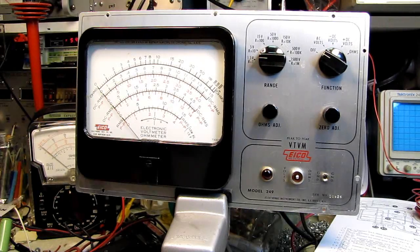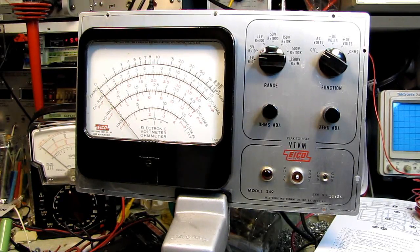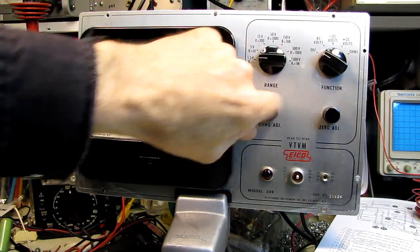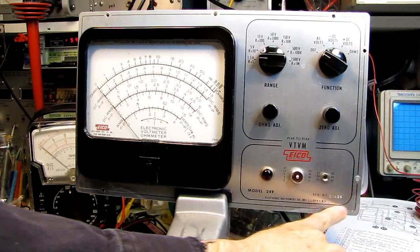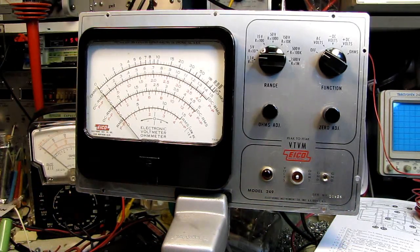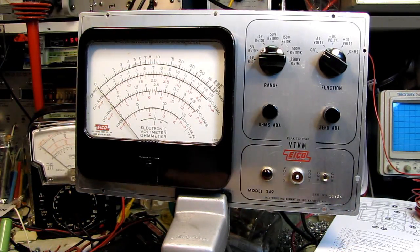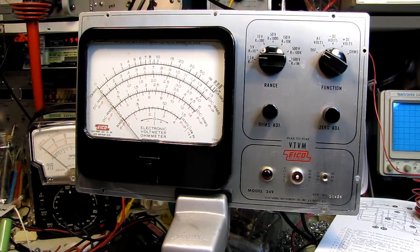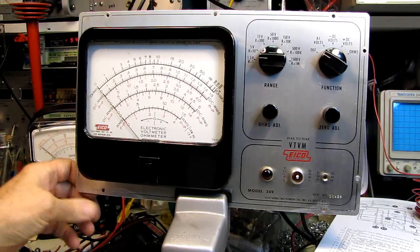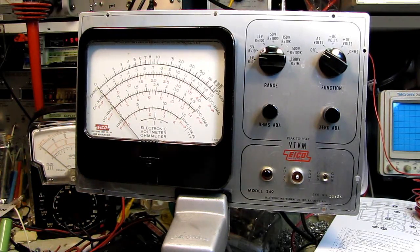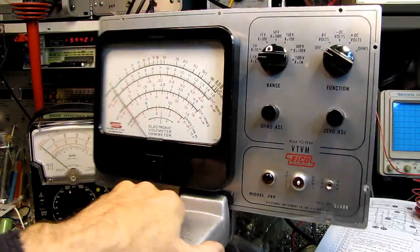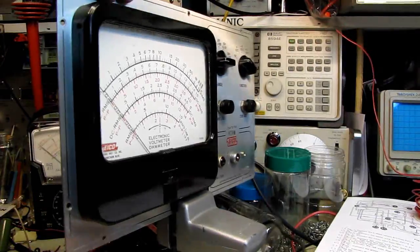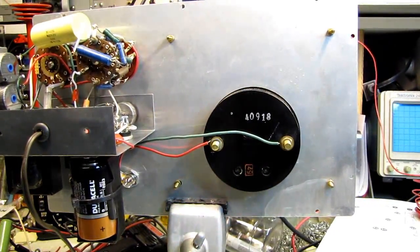Coming down to the finishing line with our ICO model 249 VTVM. We buffed up the face of the meter, the bezel on the meter, we buffed up the knobs, put everything back together, cleaned up as best we could where the anodizing had been damaged on the front panel. If I went any deeper, I would have taken the silk screening off. This could be re-anodized, but then you'd have to re-silk screen it. And I don't have the facilities to do that.